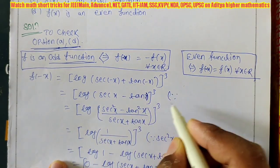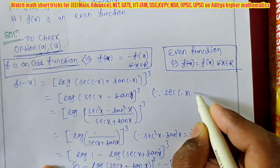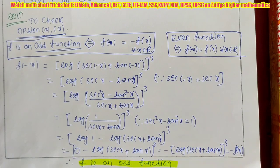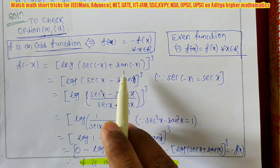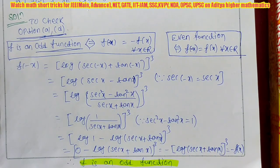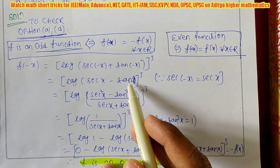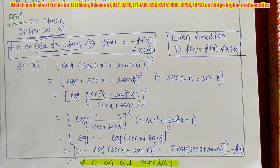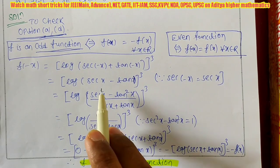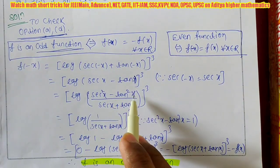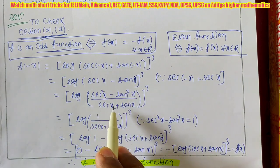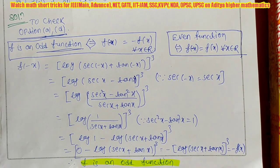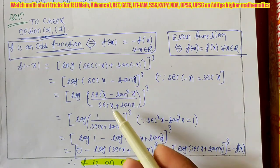Now I multiply sec x - tan x by (sec x + tan x) in both numerator and denominator to use the identity sec²x - tan²x = 1. The numerator becomes sec²x - tan²x = 1, and the denominator is (sec x + tan x). So we get 1/(sec x + tan x), and the whole expression is cubed. That gives f(-x) = log[1/(sec x + tan x)³].